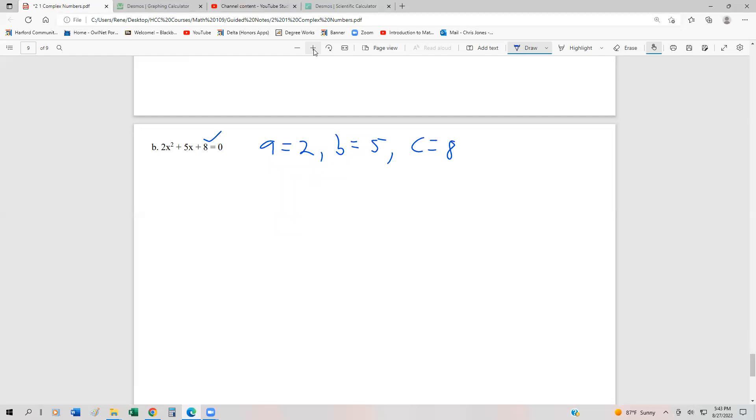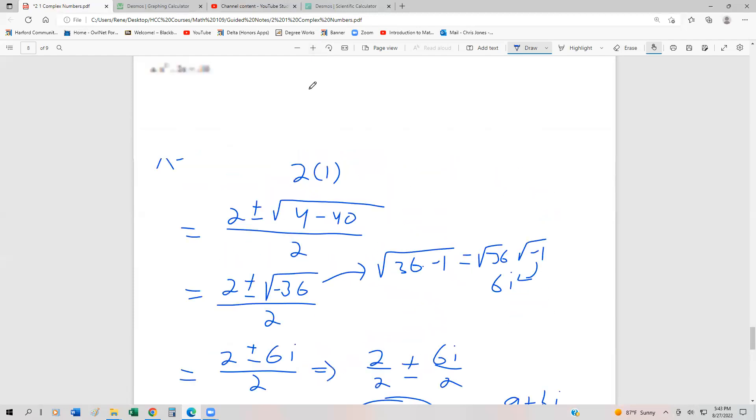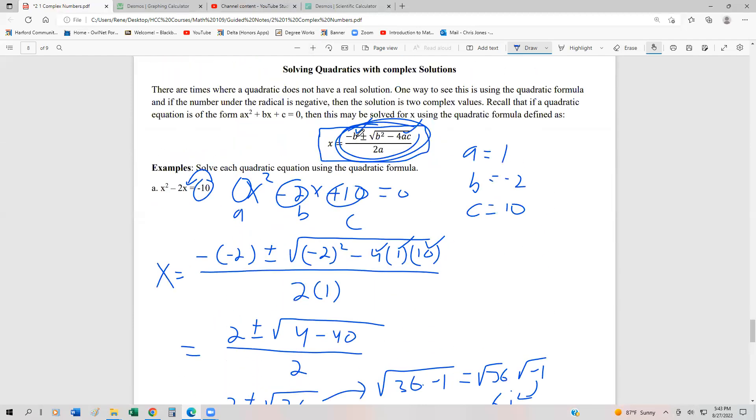Let's go ahead and simplify our quadratic formula, just in case we forgot it. Negative b plus or minus square root b squared minus 4ac divided by 2a.